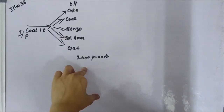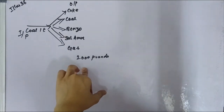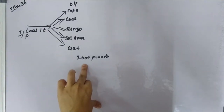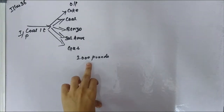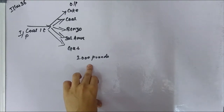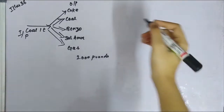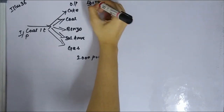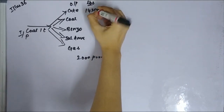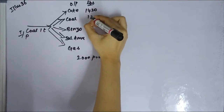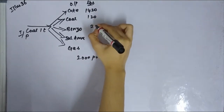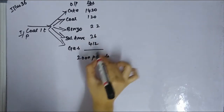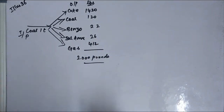The output in lbs is as follows: coke 1420, coal tar 120, benzol 22, sulphate of ammonia 26, gas 412 — total output of 2000 pounds.